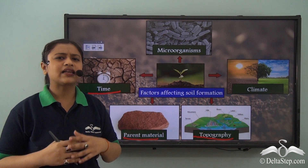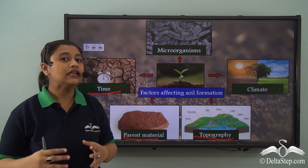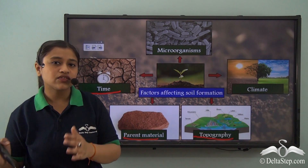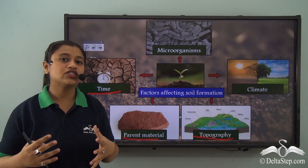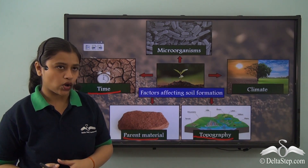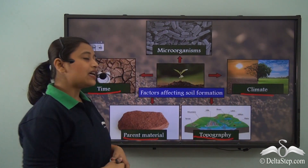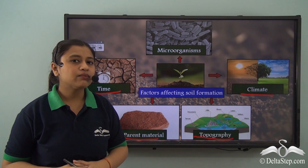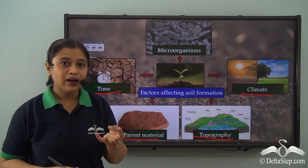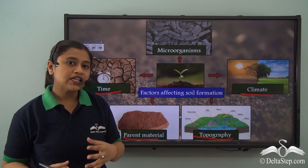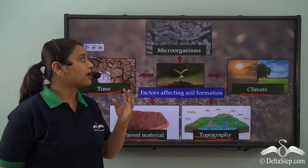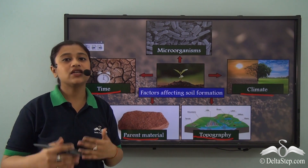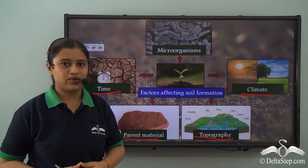Climate also plays an important role. The temperature changes and the type of climate in different parts of the world play an important role in determining different types of soil. Lastly, we have microorganisms. The formation of organic matter in soil is because of the presence of microorganisms, and we will learn more about how this happens.